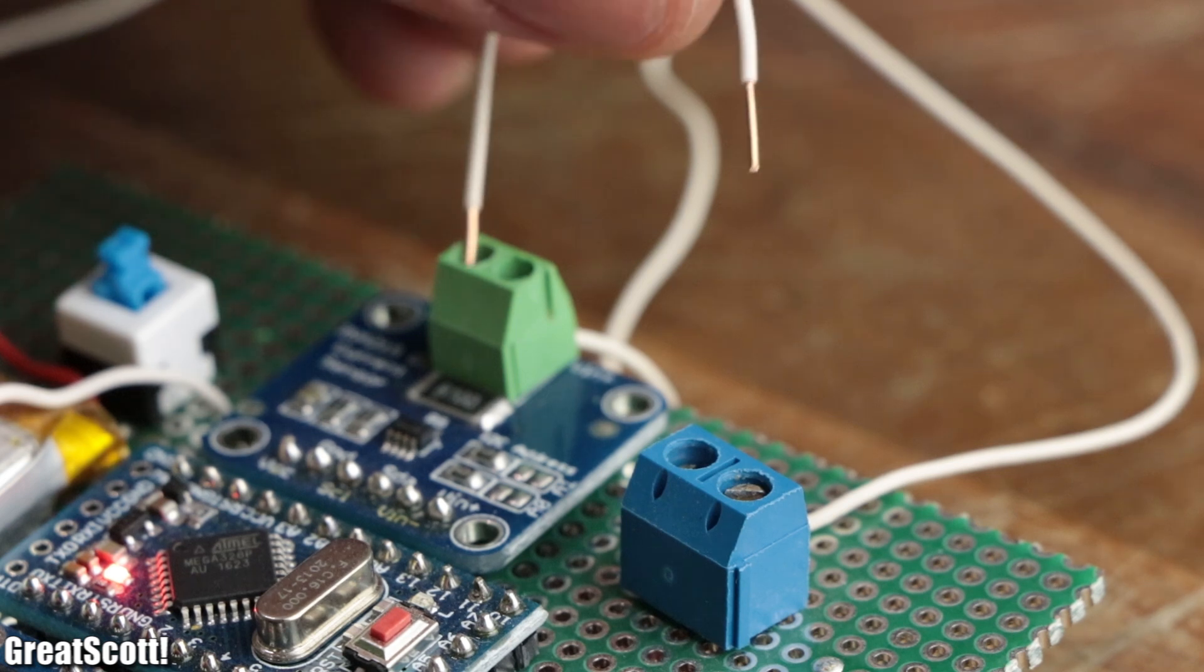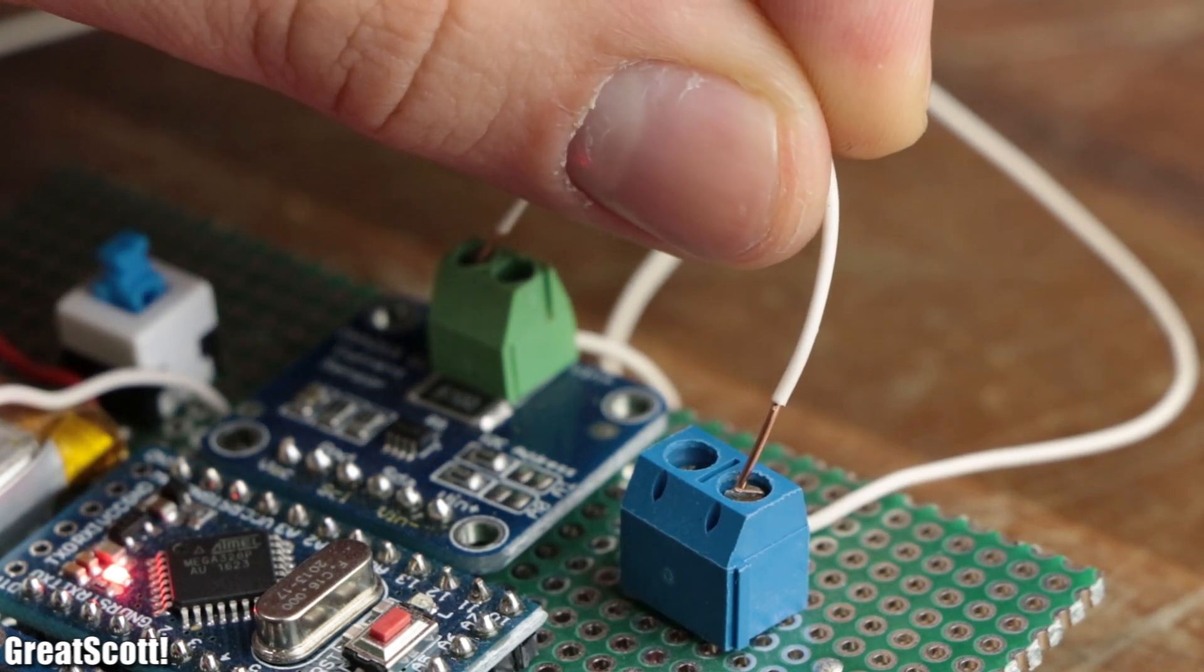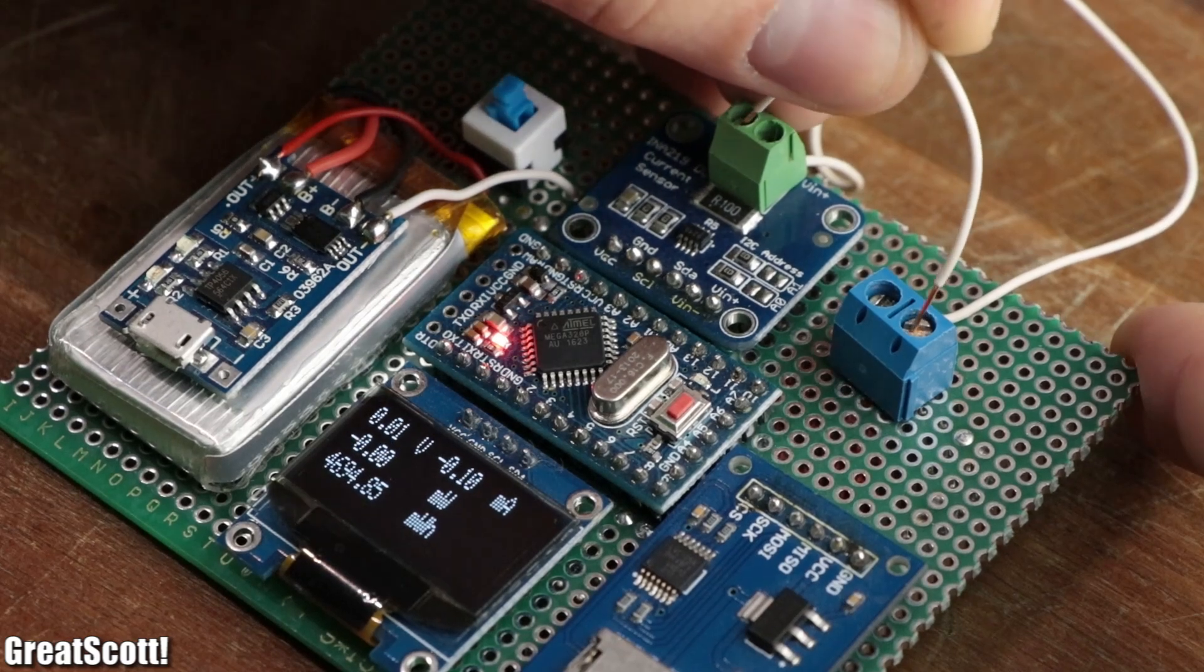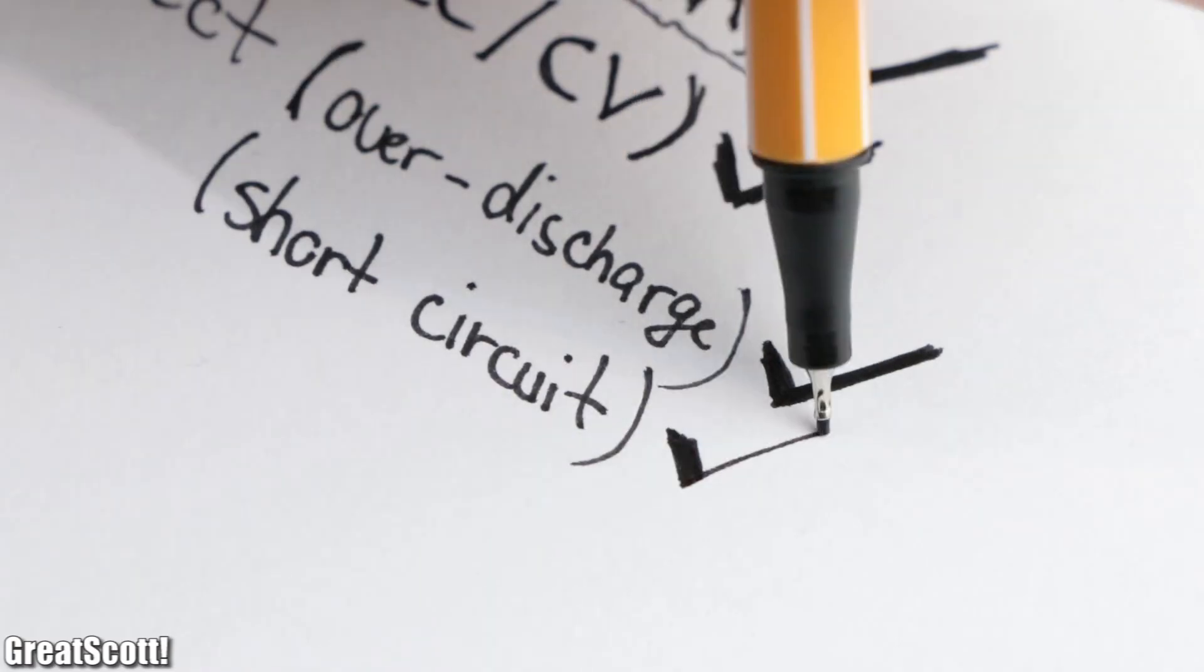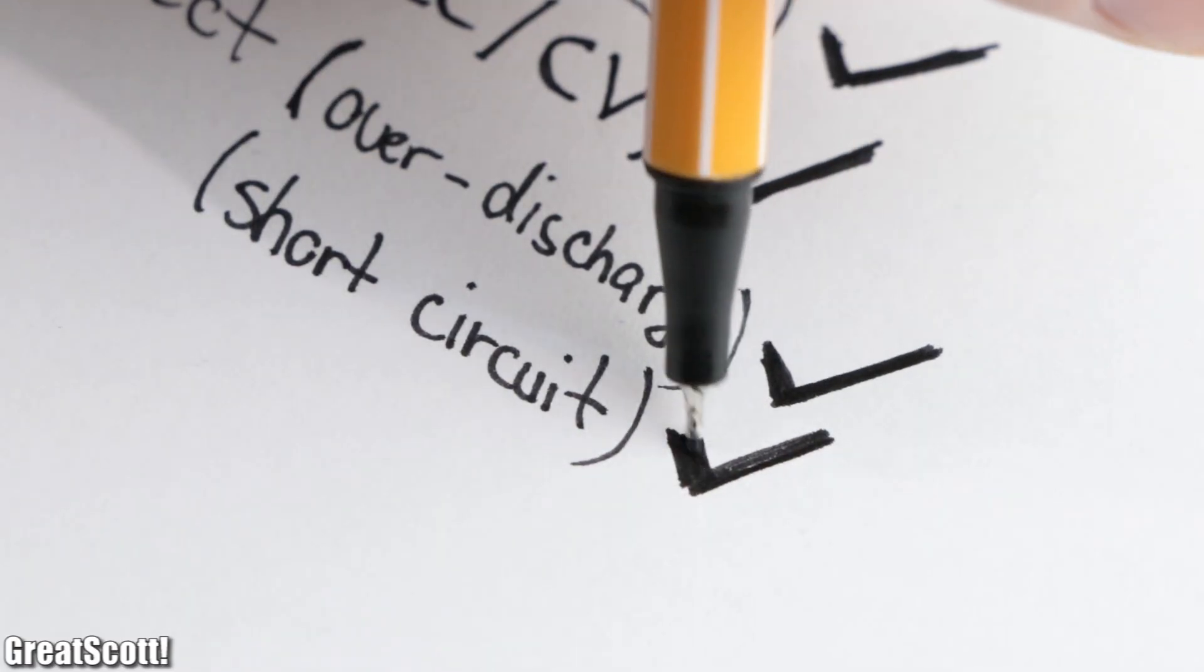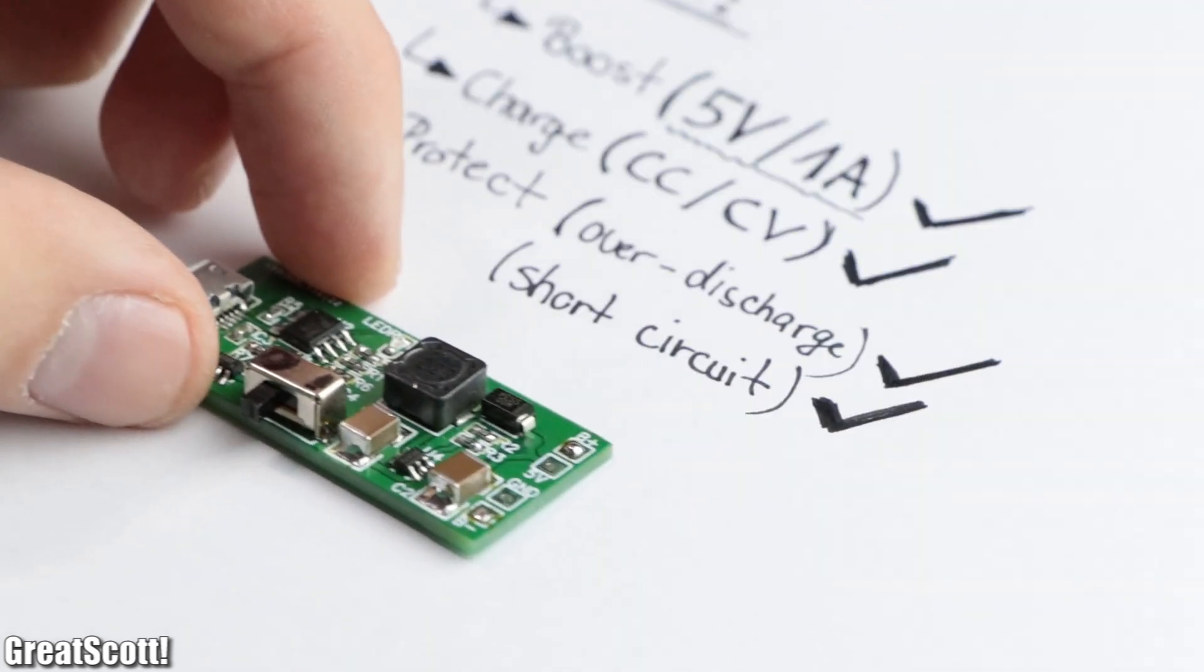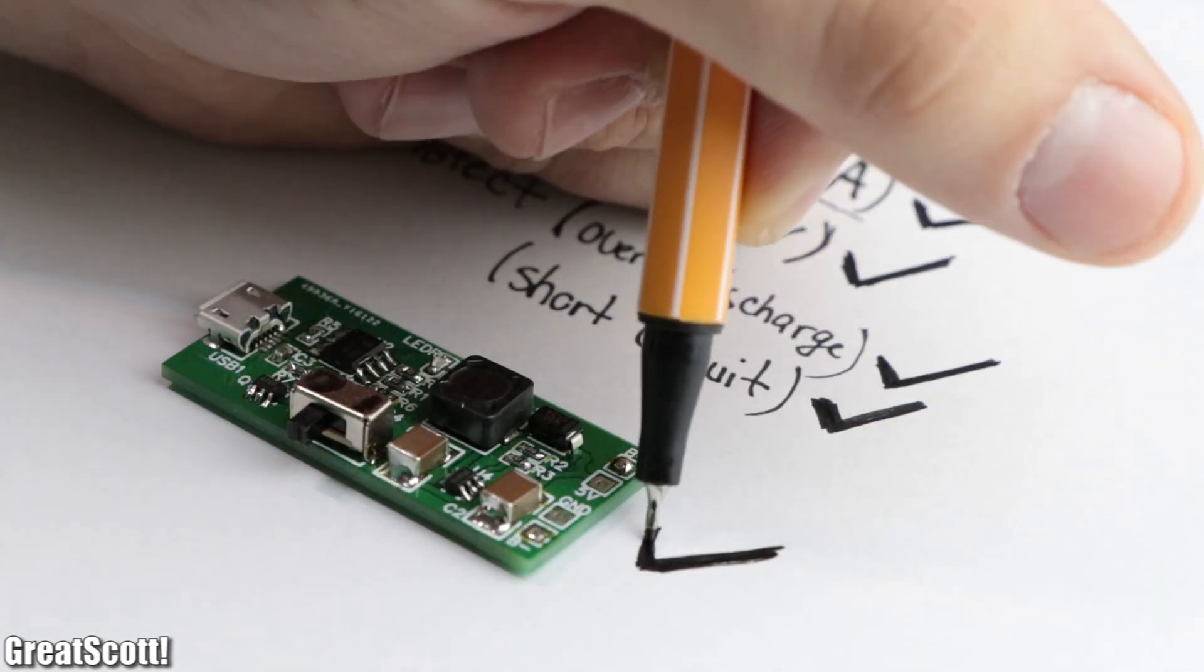Last but not least, I shorted the 5V output of the circuit, which immediately turned off the boost converter. Which means the short circuit protection feature also worked like a charm, and my LiPo charge, protect, boost circuit passed all my tests.